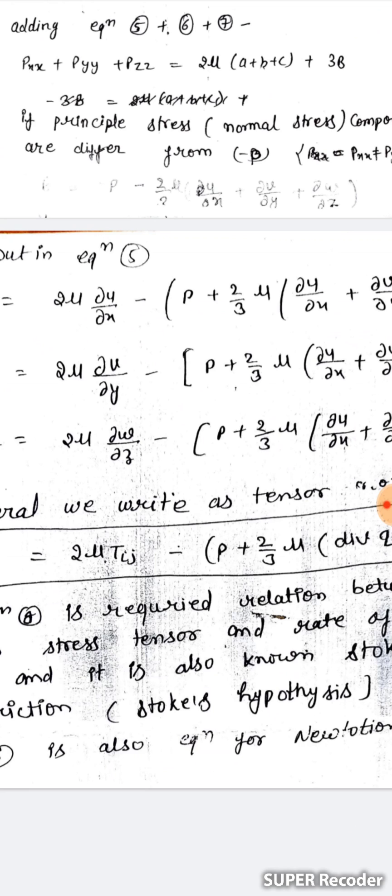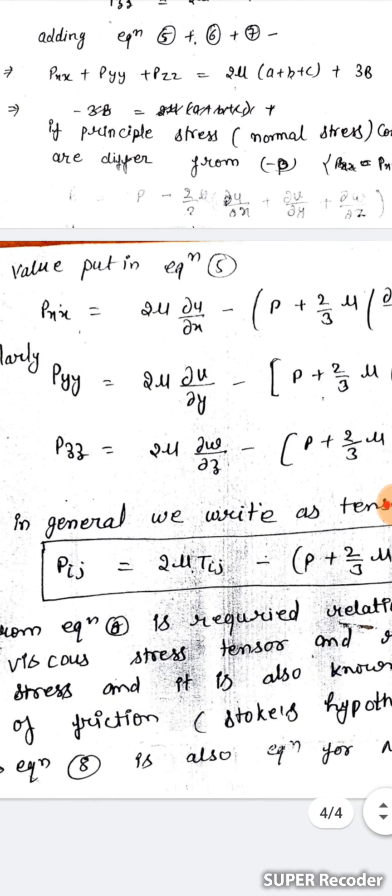Substituting B into equation 5, we get: Pxx = 2*mu*(du/dx) - P - (2/3)*mu*(du/dx + dv/dy + dw/dz). Similarly, Pyy = 2*mu*(dv/dy) - P - (2/3)*mu*(du/dx + dv/dy + dw/dz), and Pzz = 2*mu*(dw/dz) - P - (2/3)*mu*(du/dx + dv/dy + dw/dz).